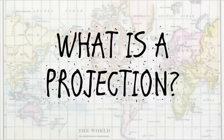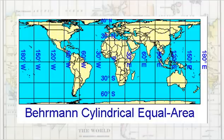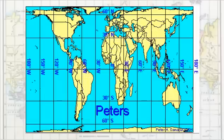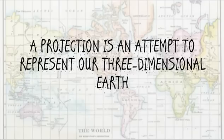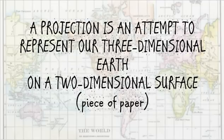So, what is a projection? Well, it's basically the reason that this map looks different from this map and this map. A projection is an attempt to represent our three-dimensional Earth on a two-dimensional surface, like a piece of paper.